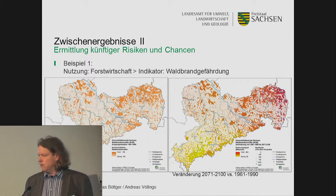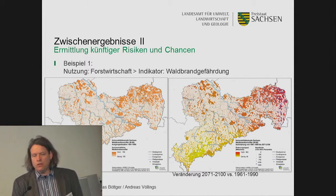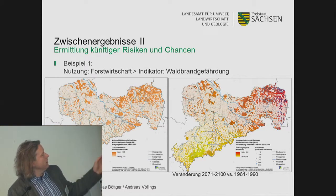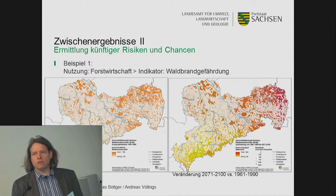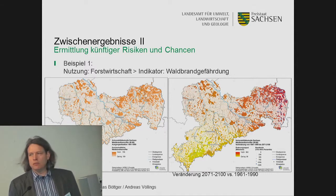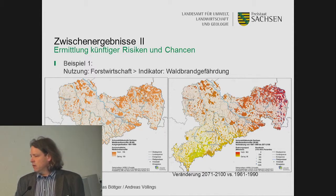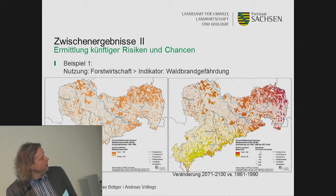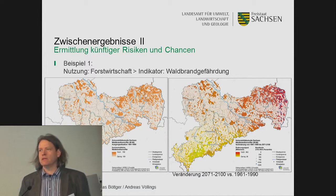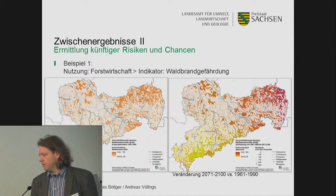A second example is for forestry: the risk of forest fires. Again, the baseline period is 1961 to 1990. It is not surprising that the northeastern part of Saxony has a higher risk for forest fire. More interesting are the change signals — especially in the northeastern area, it is deeply red. In the Ore Mountains, however, it is not so critical.